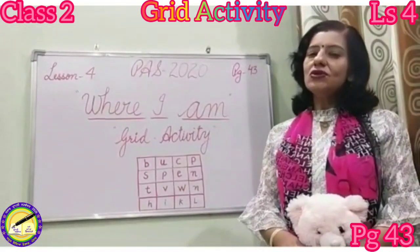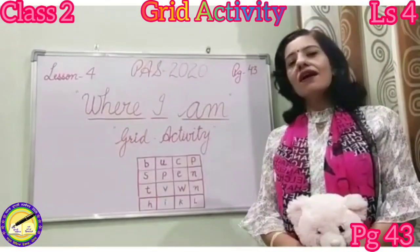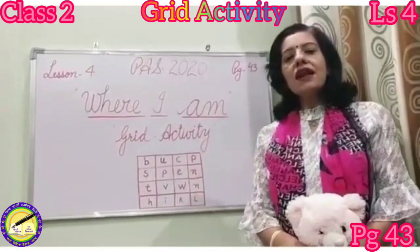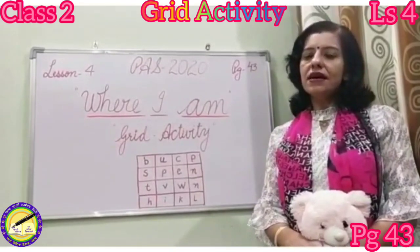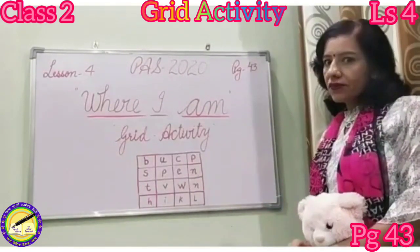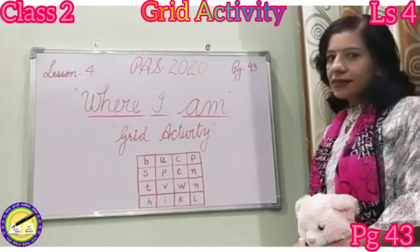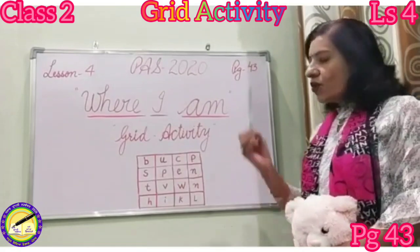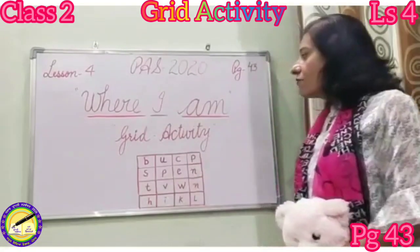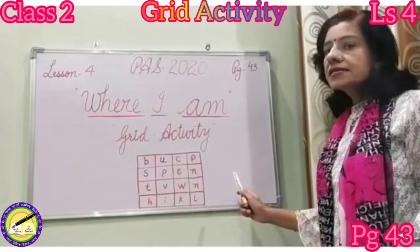Welcome to the new topic of the day — grid activity. Dear children, just like hide and seek, one word is hidden in this grid. You have to find out that word and we will encircle it. What is this? This is a pen. Find out the word 'pen' in this grid.